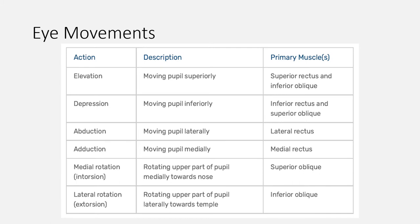Now let's move to eye movements. We have the following eye movements: elevation, depression, abduction, adduction, intorsion, and extorsion. Elevation is done by the superior rectus and inferior oblique muscles. Depression is done by the inferior rectus and superior oblique muscles. Abduction is done by the lateral rectus muscle. Adduction is done by the medial rectus muscle. Intorsion is done by the superior oblique muscle, and extorsion is done by the inferior oblique muscle. Note that the oblique muscles do movements opposite to their names — the superior oblique causes depression, and the inferior oblique causes elevation of the eye.